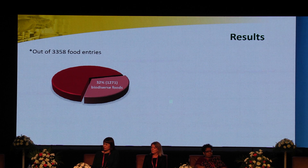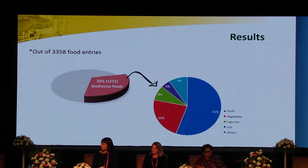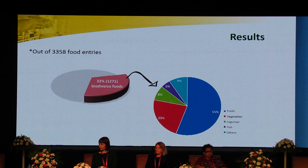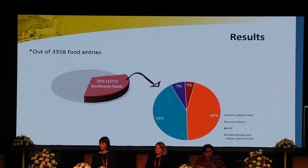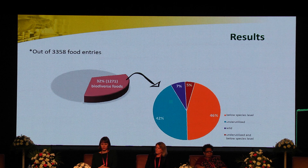Out of these 3,300 food entries, we could identify that 32% were accounting for at least one of these indicators, resulting in a dataset of 1,271 foods. When we look only at this dataset, we can see that the data represents mainly plant foods — 55% of the foods were fruits and 23% vegetables. When divided according to the indicators, 46% of the foods were below species level and 42% were underutilized.